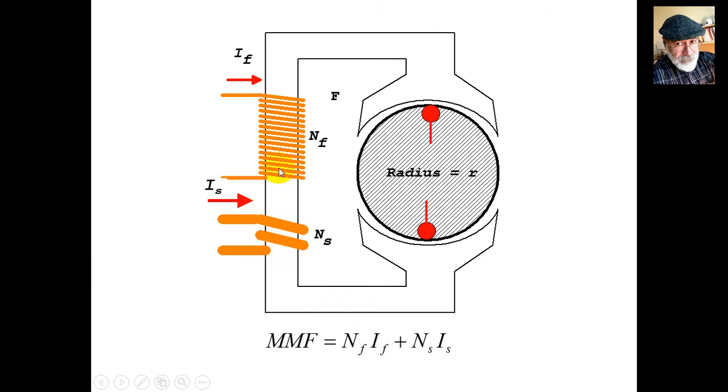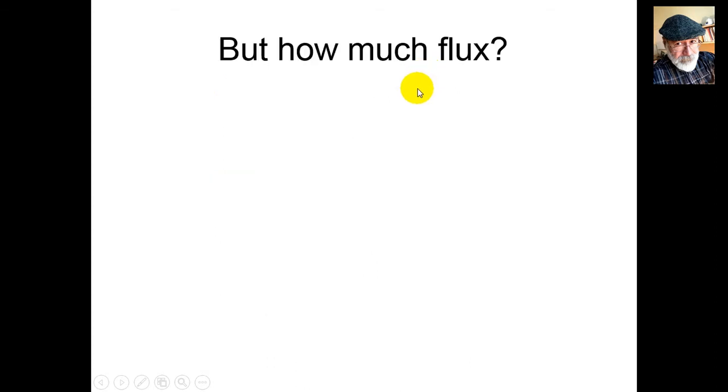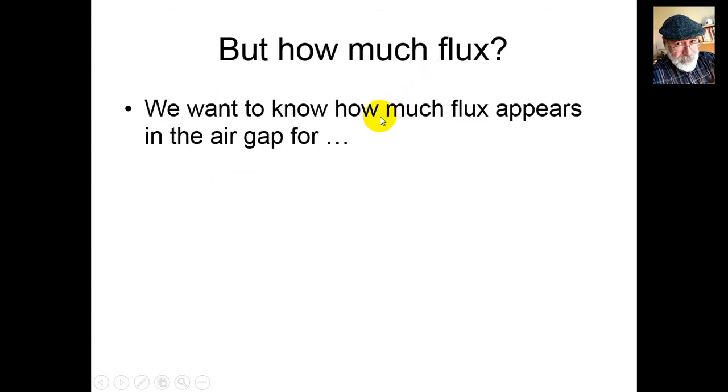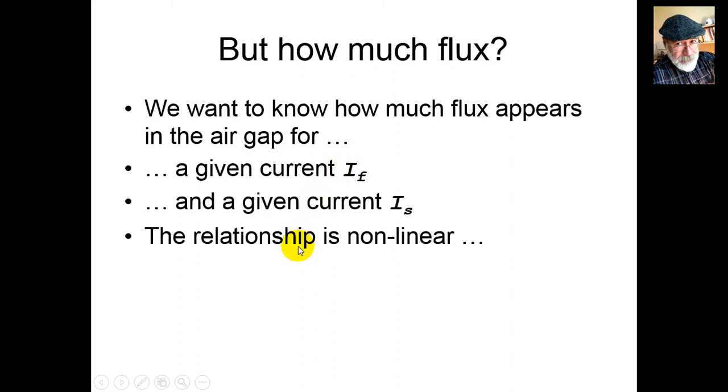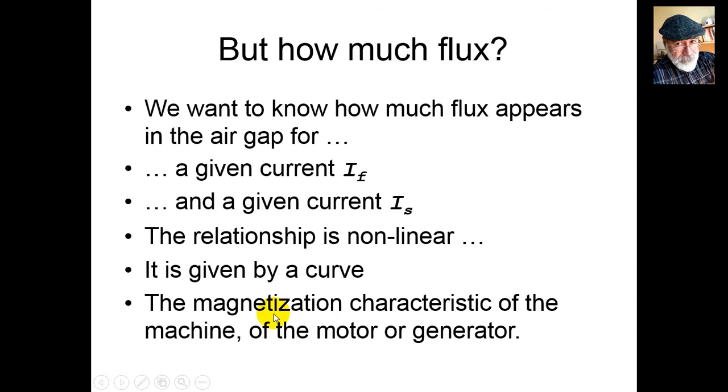How much flux do we get in the air gap for given currents IF and IS? The relationship, unfortunately, is not linear. It's given by a curve - the magnetization characteristic of the motor or generator, provided by the manufacturer.